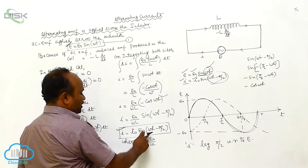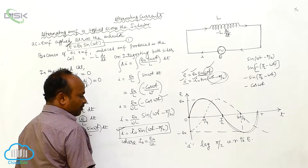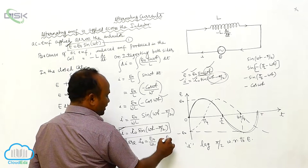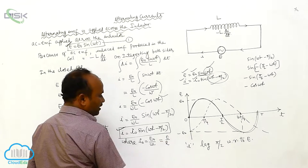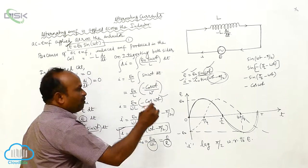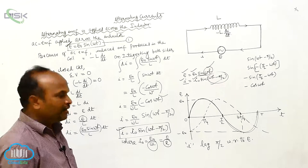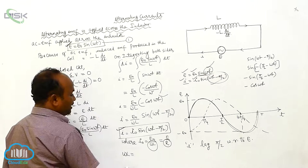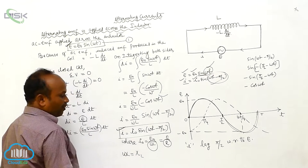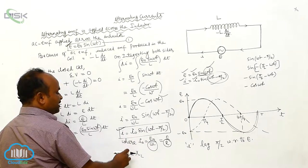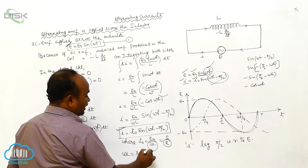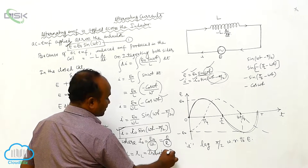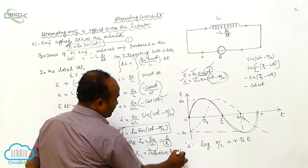I₀ is equal to E₀ by ωL. Comparing this with E by R, in the place of R, what is there? ωL is there. This ωL is represented by XL. XL is called inductive reactance.